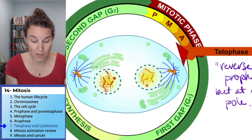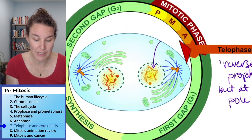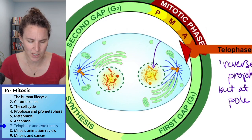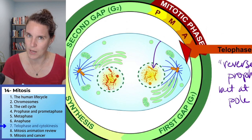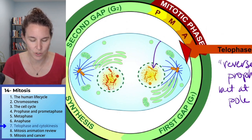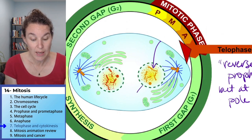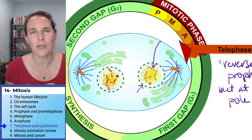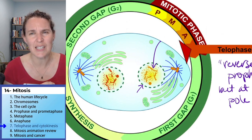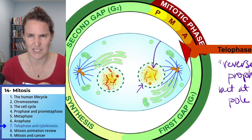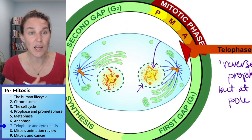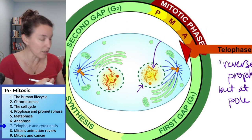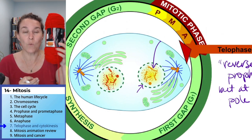Look — our chromatin is uncondensing. They've drawn them like dots — not a fan, but that's how they're drawing it. Did I say our chromosomes are condensing? It's uncondensing. It's unwinding. The chromosome log is unwinding.